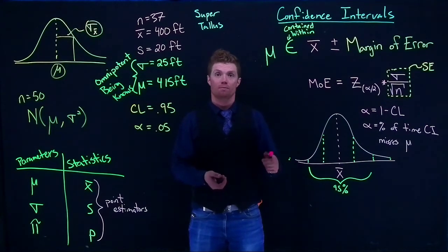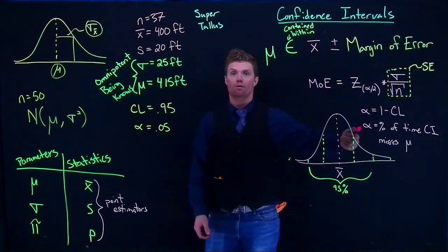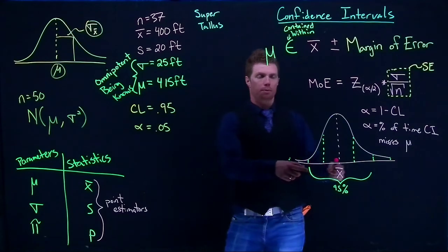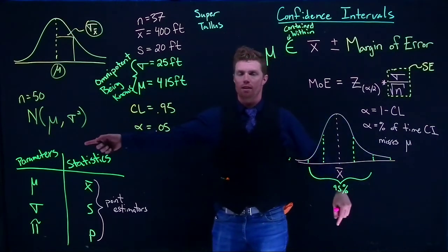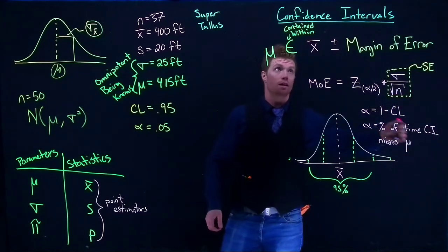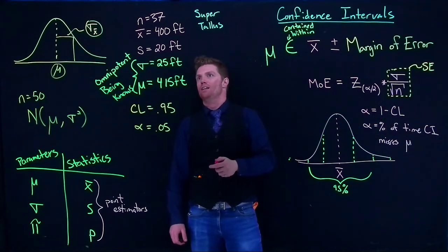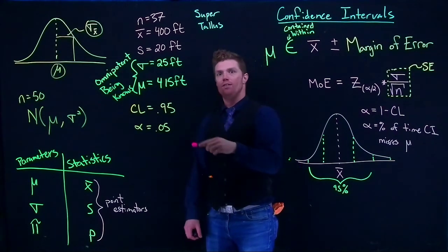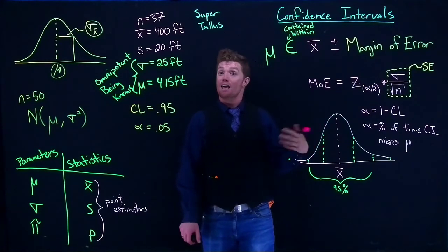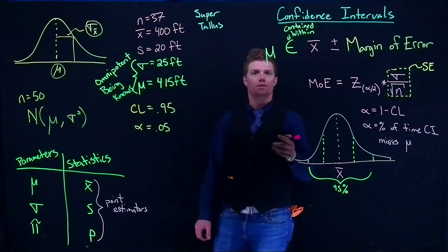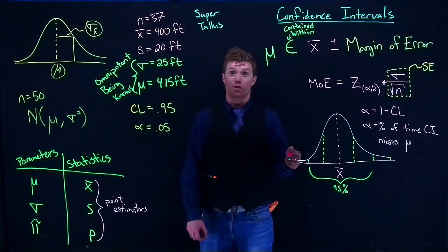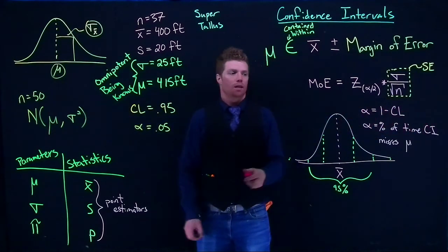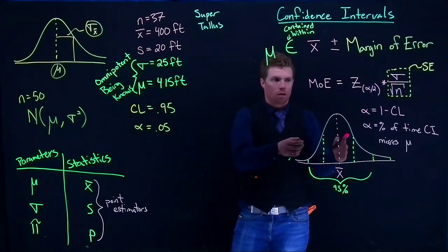One thing we have to concede is that we have to be willing to be wrong sometimes in statistics. You might say, let me just make my confidence interval 100% — but if we want to capture 100% of the data, we have to go from negative infinity to positive infinity. So my margin of error would be: I'm 100% confident the true population mean height of this tree is somewhere between negative infinity and positive infinity feet. Am I correct? Yes — but it's not useful because that range is way too big.